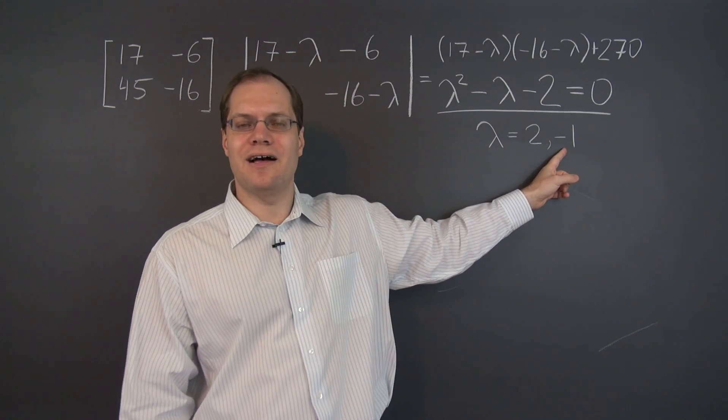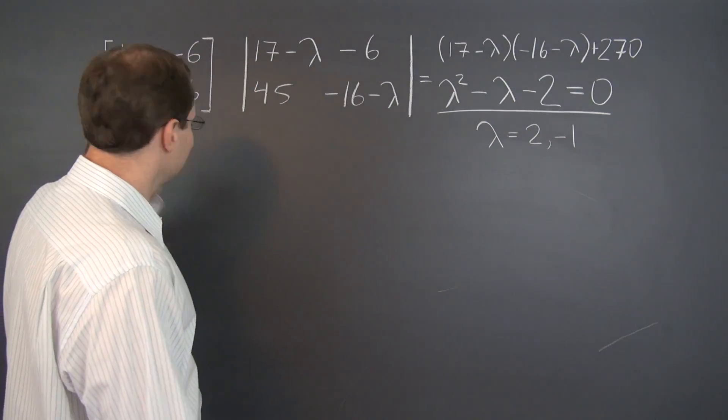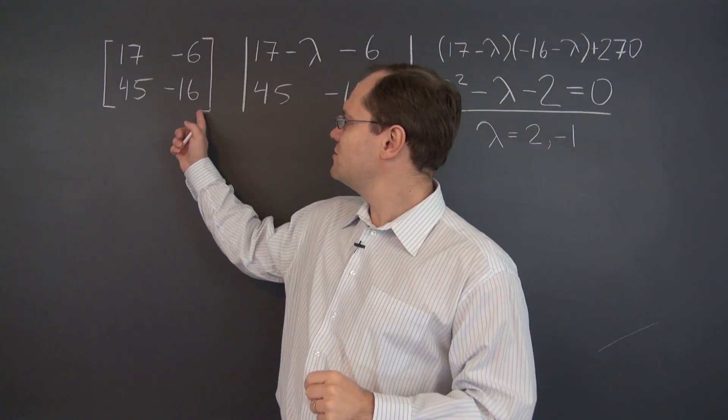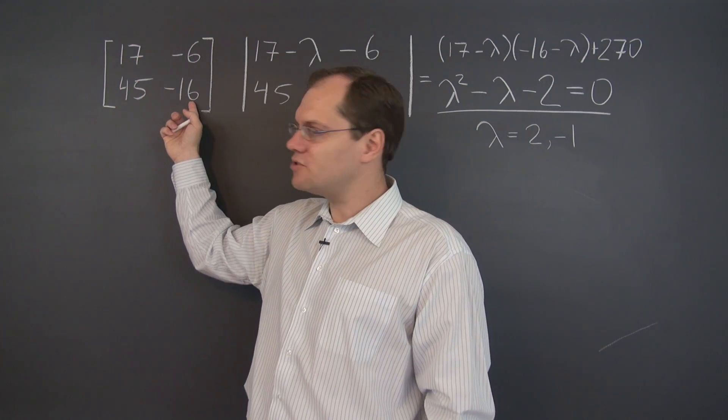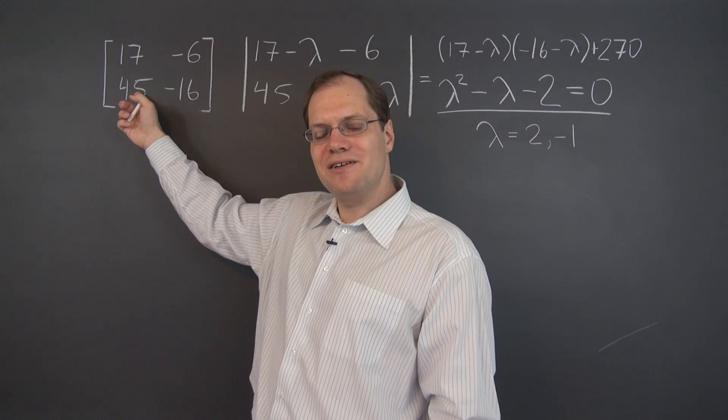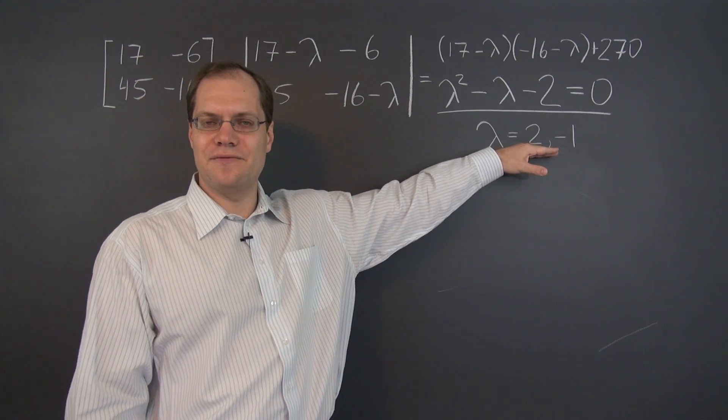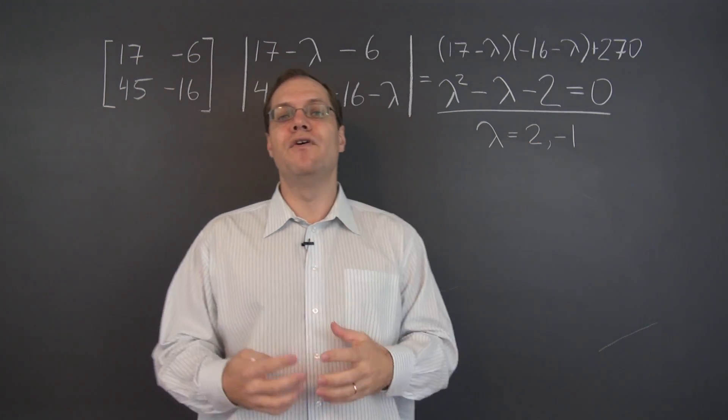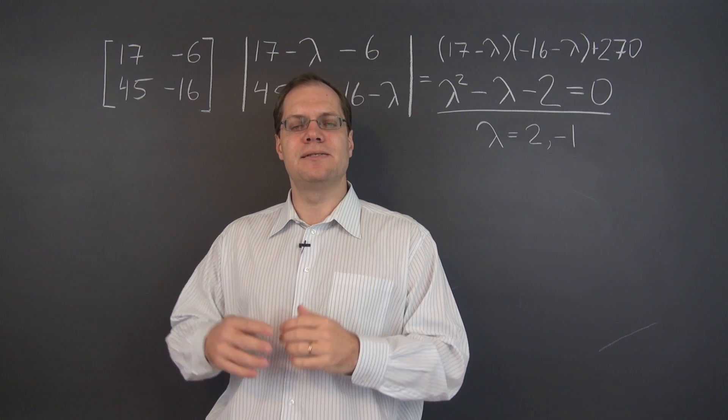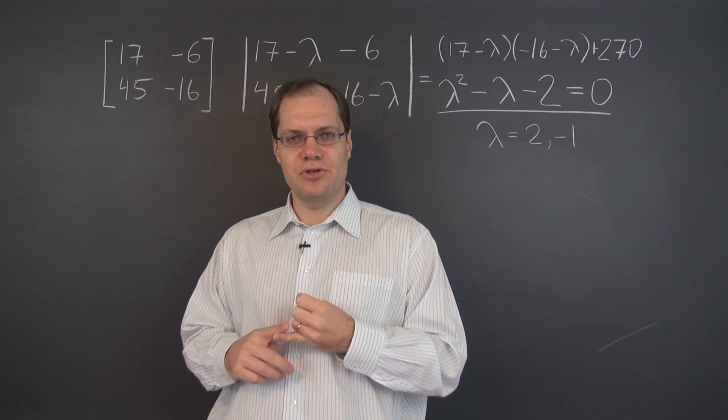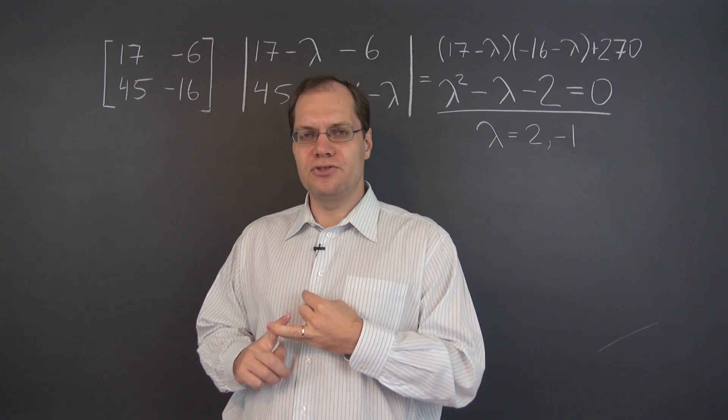What about the product of the eigenvalues? That's minus 2. Well, that's the determinant of this matrix. The determinant of this matrix is our familiar minus 272 plus 270, which equals negative 2. And that's the product of the eigenvalues. So if you have a full set of eigenvalues, as many eigenvalues as the dimension of the space, their sum is the trace, and their product is the determinant, and it's always true.